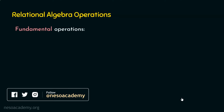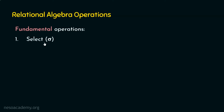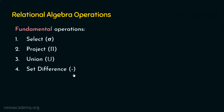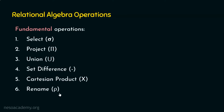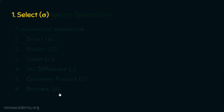We have basically six fundamental operations: number one, the select operation; number two, project; number three, union; number four, set difference; number five, Cartesian product; and number six, the rename operation. In this presentation, we are going to focus only on the first fundamental operation — the select operation. Let's step into the topic of the day, the select operation.